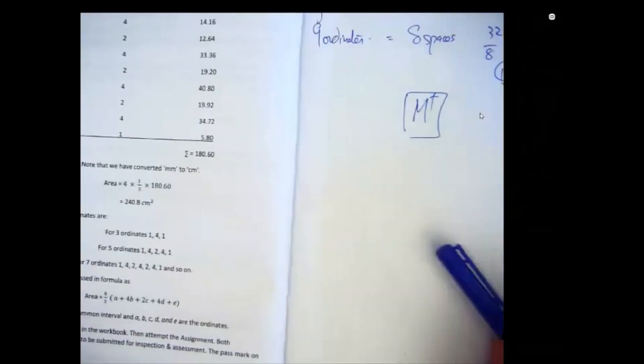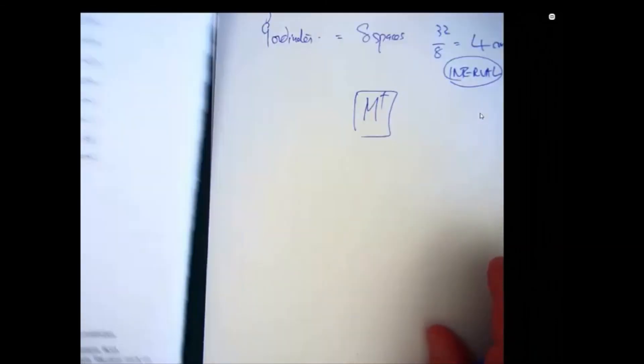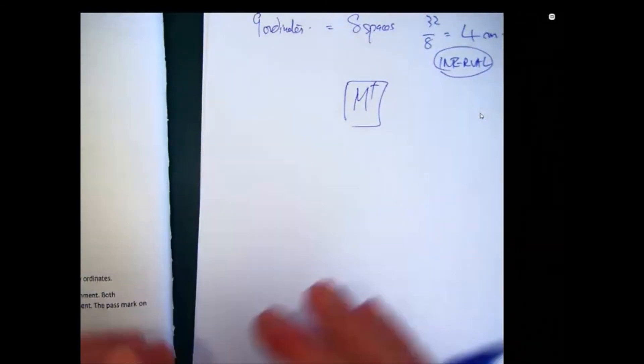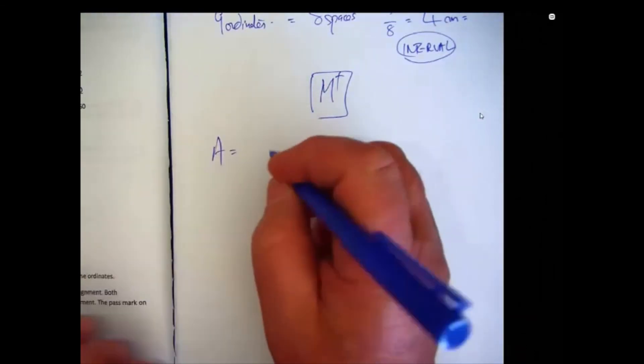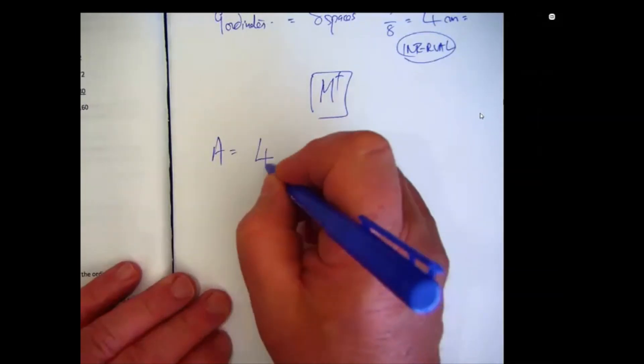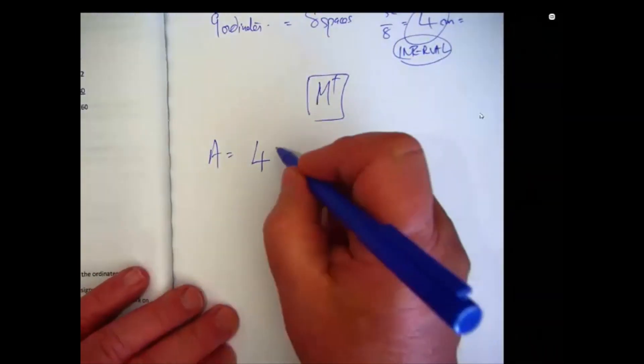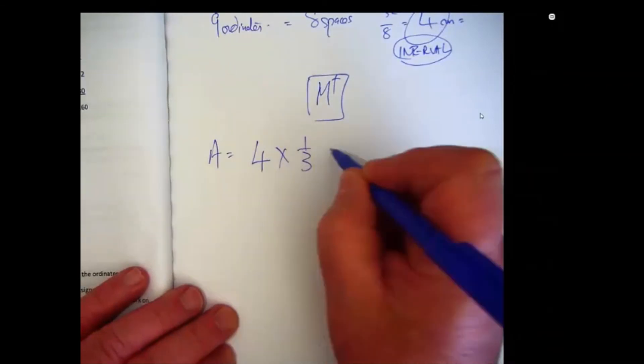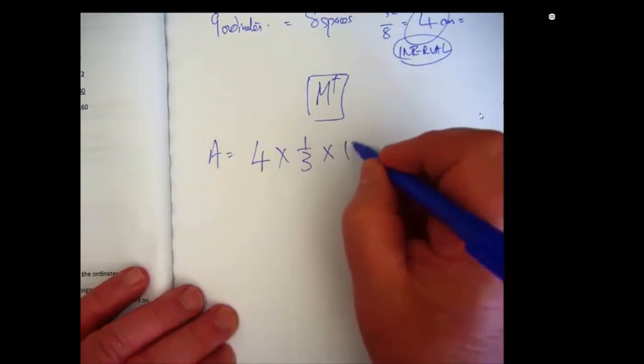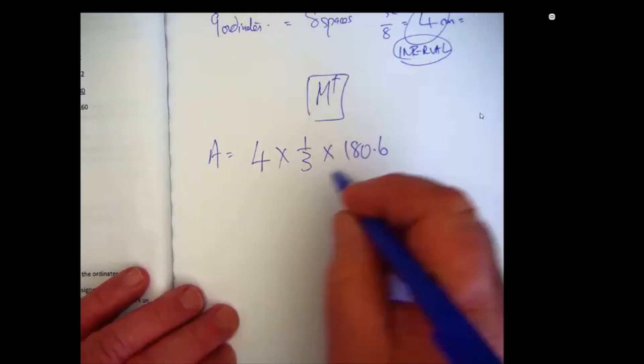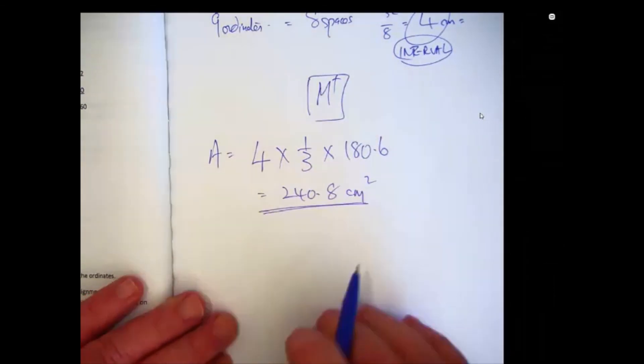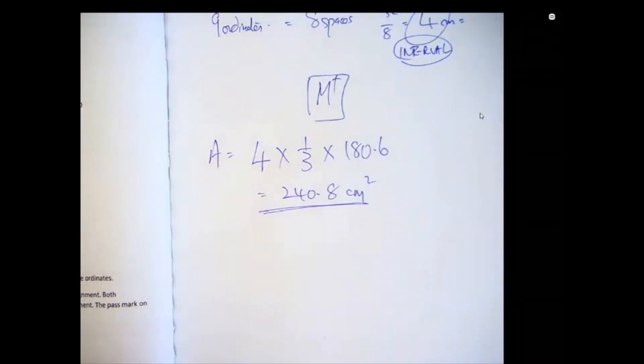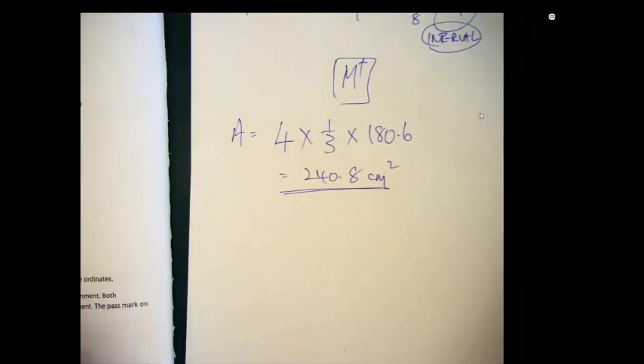So back to the book. Now we can actually work this out and show you the bits that are required. So the area now, Simpson's rule is very simple to apply. Area, here is the interval, which is 4, this was the interval up here, 4, multiplied by, and the formula says, one third of the sum of the products, which is 180.6, and this will give you 240.8 centimeters squared. There we go. And there's nothing more difficult than that.